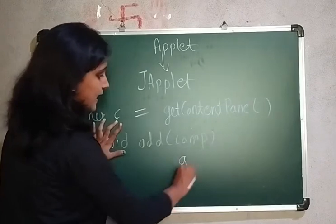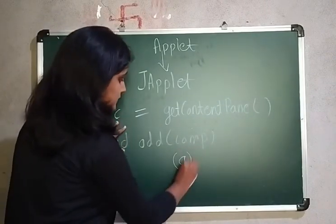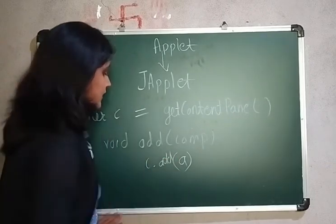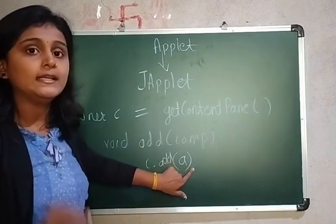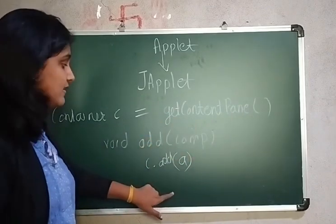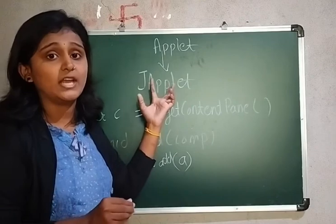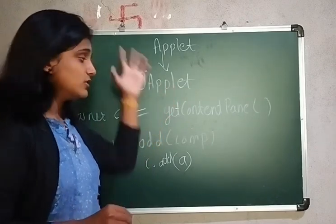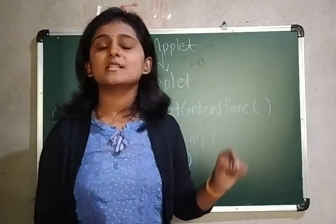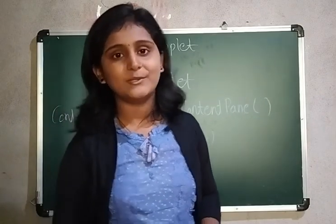For example, suppose you have created a JButton object. You first get the content pane: Container c = getContentPane(). After that, to add the button you write c.add(a) — that means on the content pane you are adding the controls. This is how it works in JApplet. If you have any questions, mention them in the comment section. Thank you for watching.